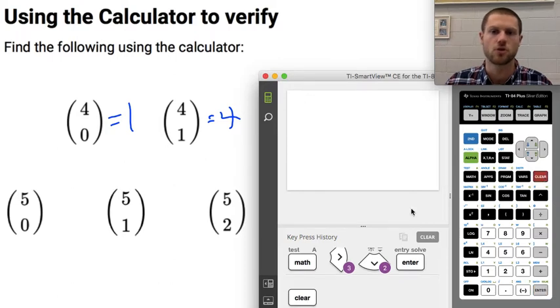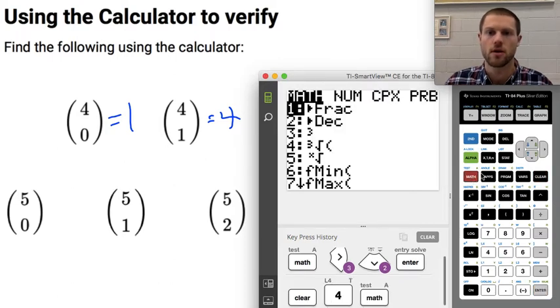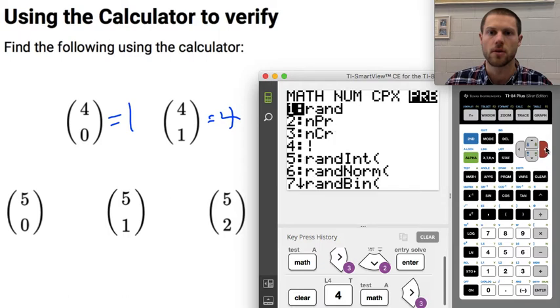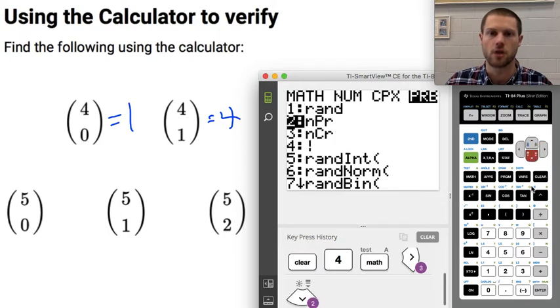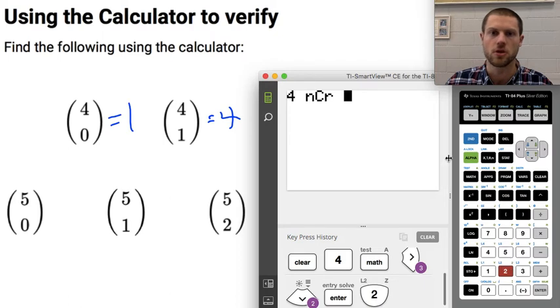So if I were to calculate 4 choose 2, I would type 4, then hit math, then go to probability, then go to N choose R, and then type in 2. So this means 4 choose 2. And when I hit enter here, I get 6.